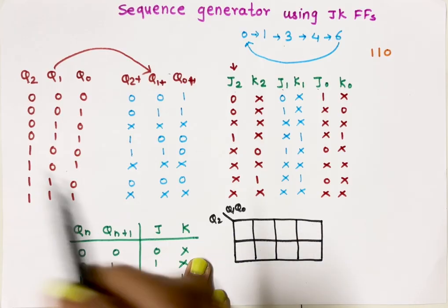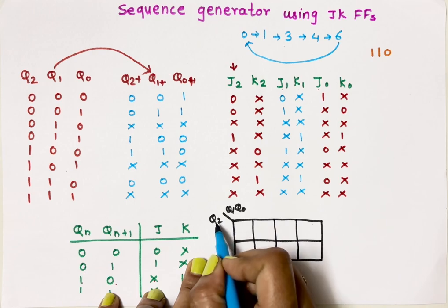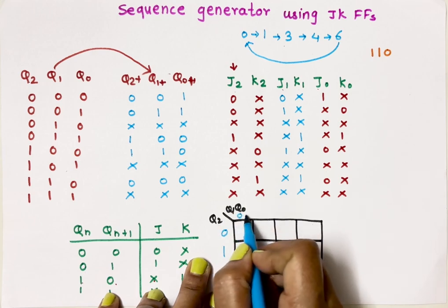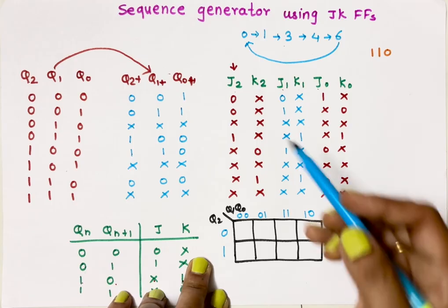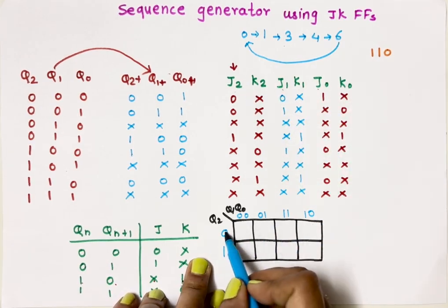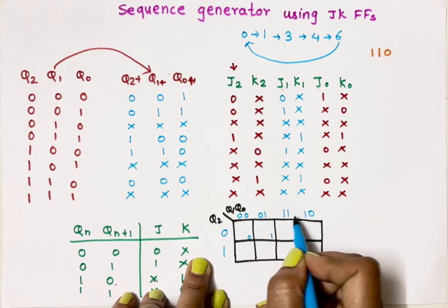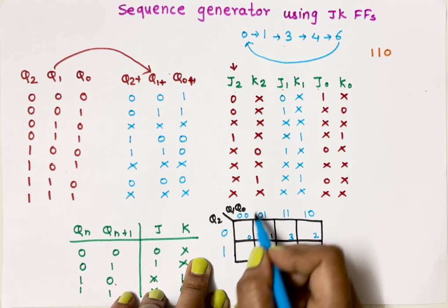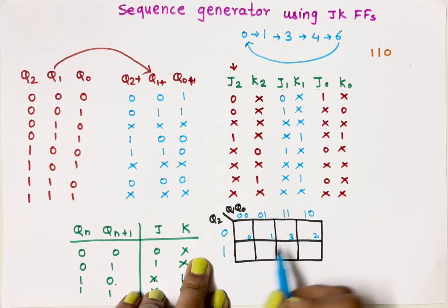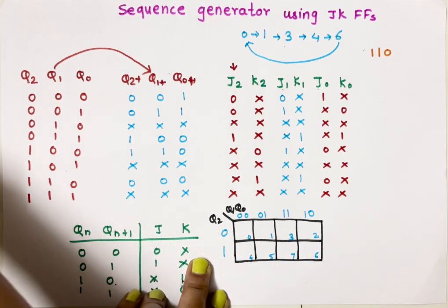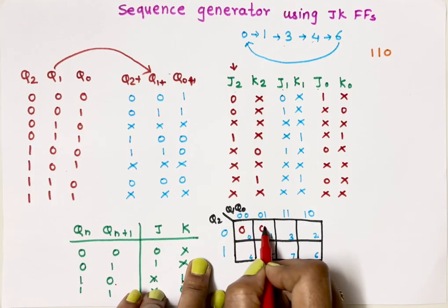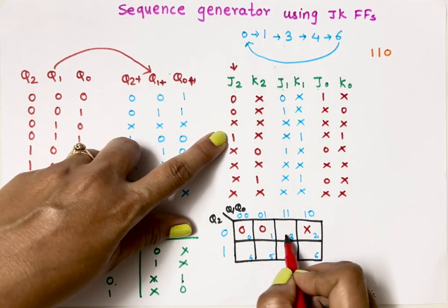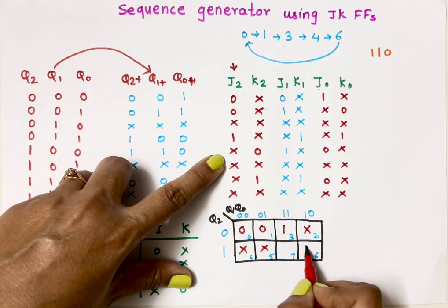In the K-map, the cells correspond to states 0, 1, 3, 2 in the top row and 4, 5, 7, 6 in the bottom row. Now let's put the values of J2 into the K-map: state 0 → 0, state 1 → 0, state 3 → don't care (2 is here), state 2 → don't care. Then state 4 → 1, state 5 → don't care, state 7 → don't care, state 6 → 1. All remaining cells are don't cares.